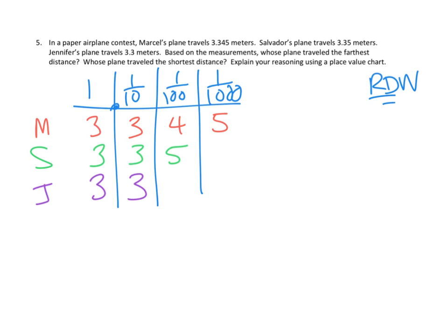Based on those measurements, whose plane traveled the farthest distance? Okay. So, which is the biggest number? That plane will have traveled the farthest distance. So, let's see. When I look in the ones column, Marcel, Salvador, and Jennifer's planes all traveled three ones, right? If I look at the tenths, they all traveled three-tenths. When I look at the hundredths, though, let's see. Jennifer's plane didn't travel any hundredths. Marcel's plane traveled four hundredths. And Salvador's plane traveled five hundredths. So, this must be the biggest number, right? Right here. This had five hundredths. Marcel's plane only had four hundredths. So, we never even get to the thousandths.